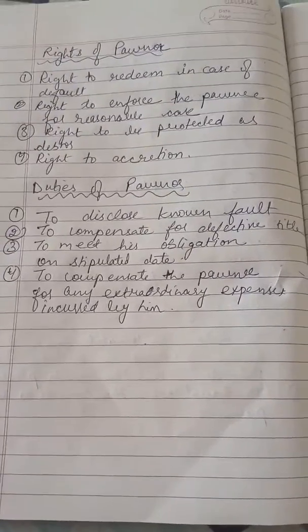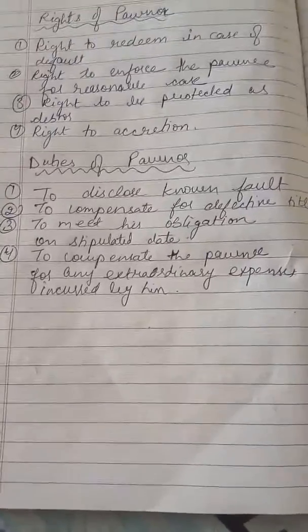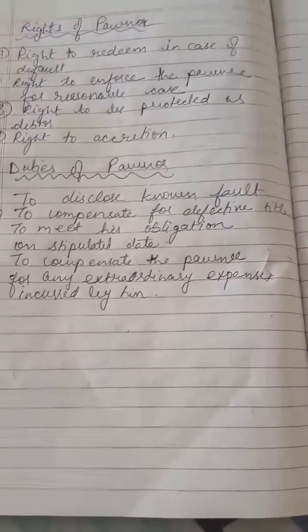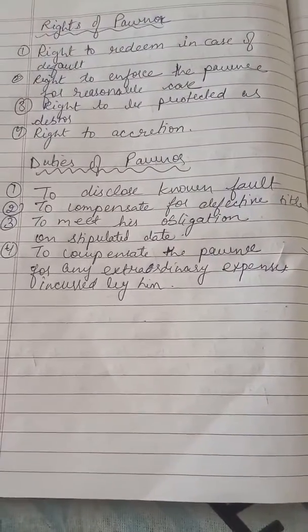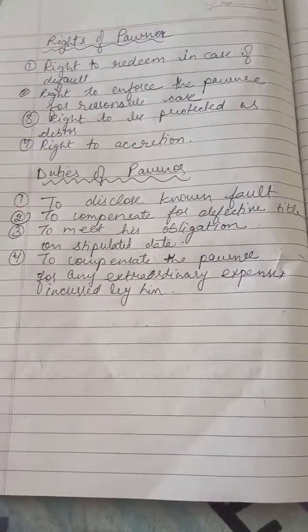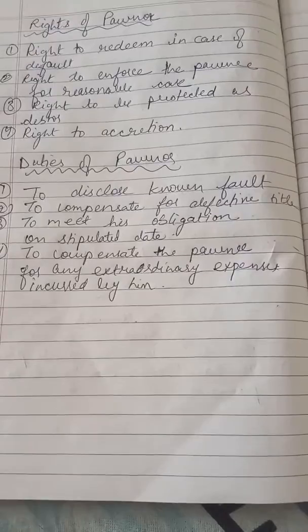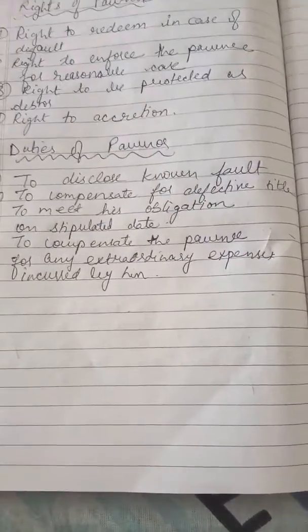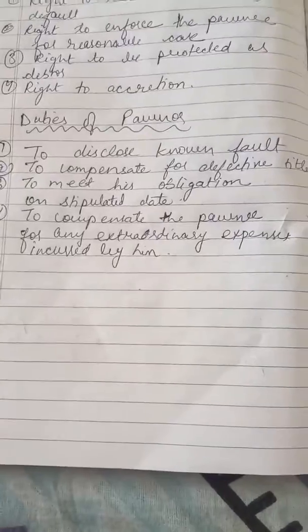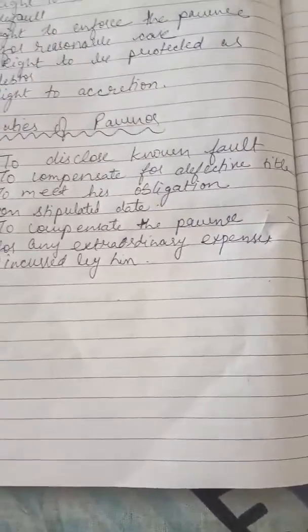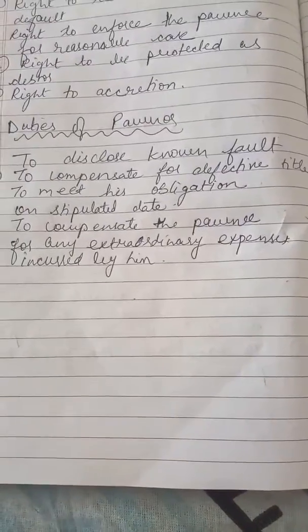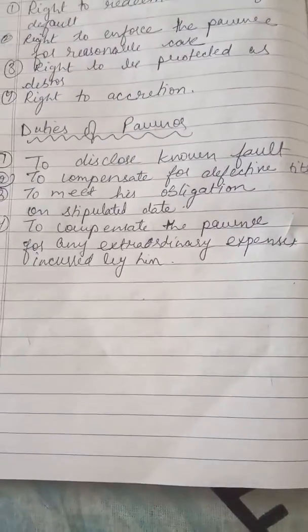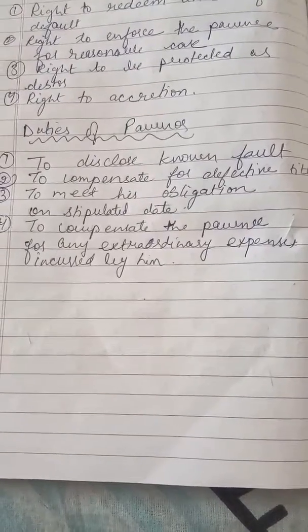Next are the duties of the pawnor. First is to disclose the faults - pawnor की responsibility है कि वो सारे faults जो goods में हैं उनको properly disclose करे. Next is to compensate for defective title - अगर जो goods deliver किये गए वो defective हैं, जैसे A ने B को horse गिरवी रखा और नहीं बताया कि वो horse vicious है - mentally right नहीं है - तो Mr. B घोड़े से गिर जाते हैं. जो भी loss होगा, duty बनती है pawnor की कि वो पूरा loss bear करे.